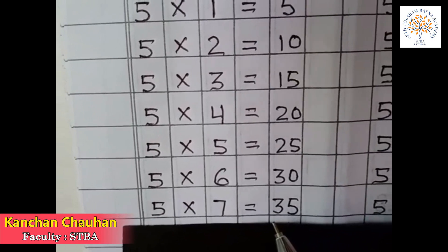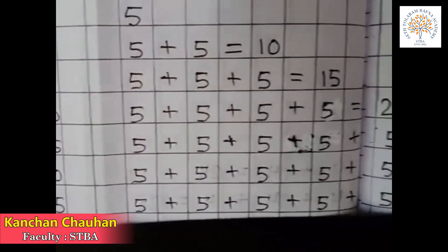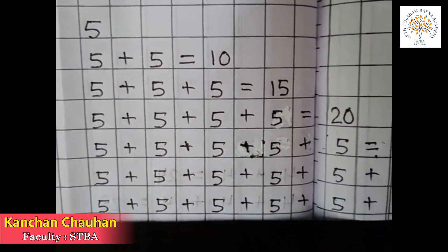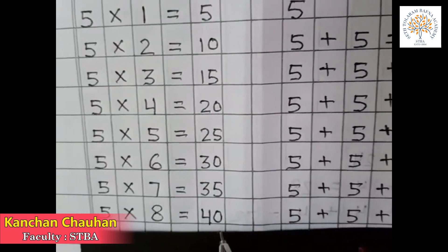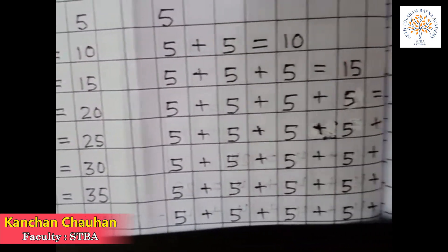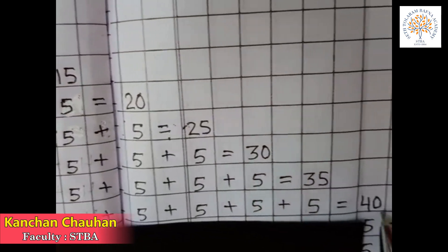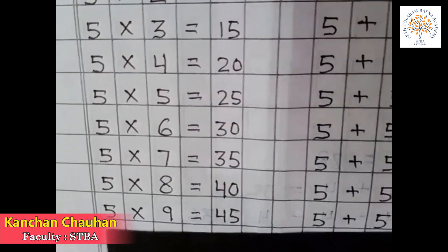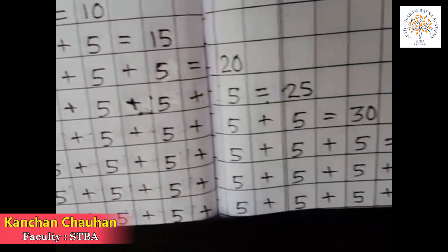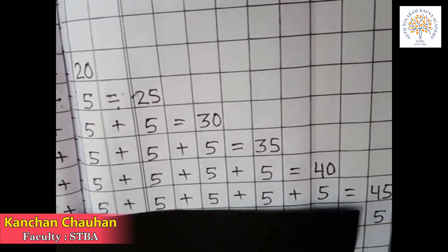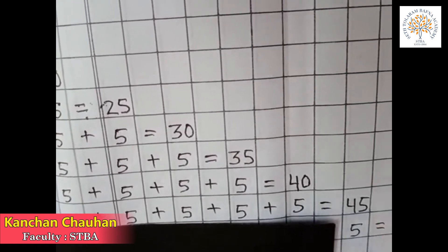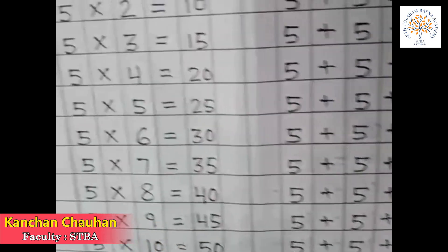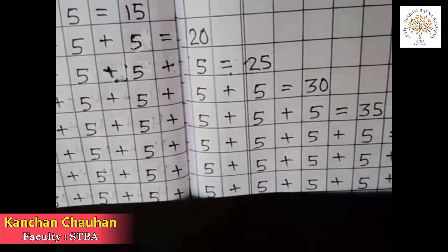5 7s are 35 — it means 7 times 5 is equal to 35. 5 8s are 40 — it means 8 times 5 is equal to 40. 5 9s are 45 — it means 9 times 5 is equal to 45. 5 10s are 50 — it means 10 times 5 is equal to 50.